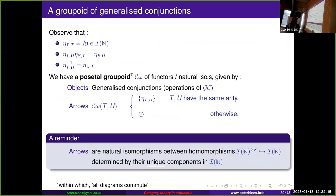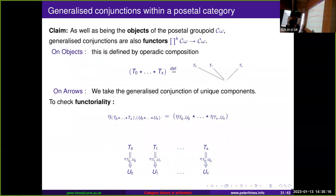We have functors and natural isomorphisms between them — so let's build a category. The natural isomorphism from a tree to itself is the identity; composing the isomorphism from s to t and from t to u gives the natural isomorphism from s to u, giving a posetal category. And the natural isomorphism from u to t is given by the isomorphism from t to u, so it's also a groupoid. We have a posetal groupoid of functors and natural isomorphisms, where the objects are generalized conjunctions, and there is a unique arrow between any two objects of the same arity.